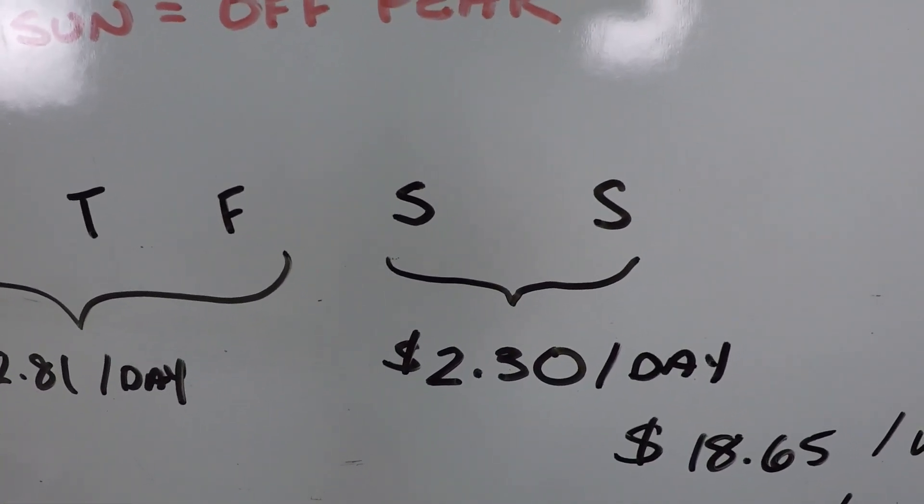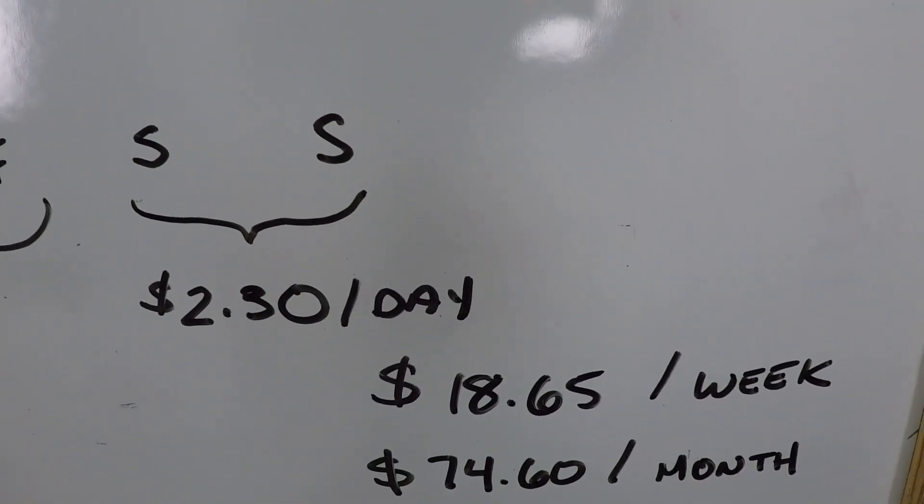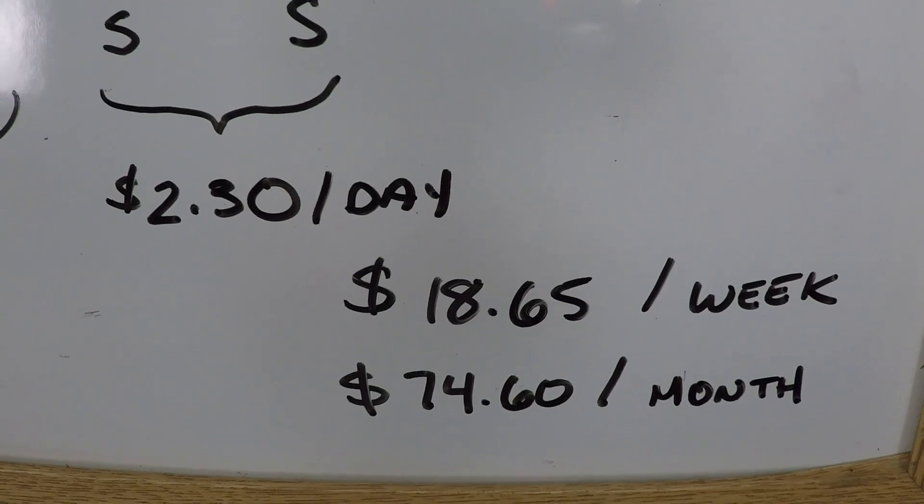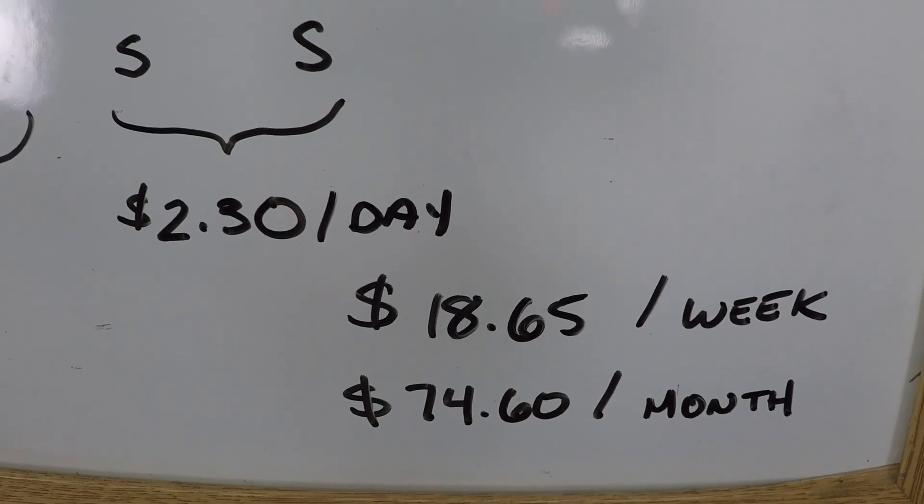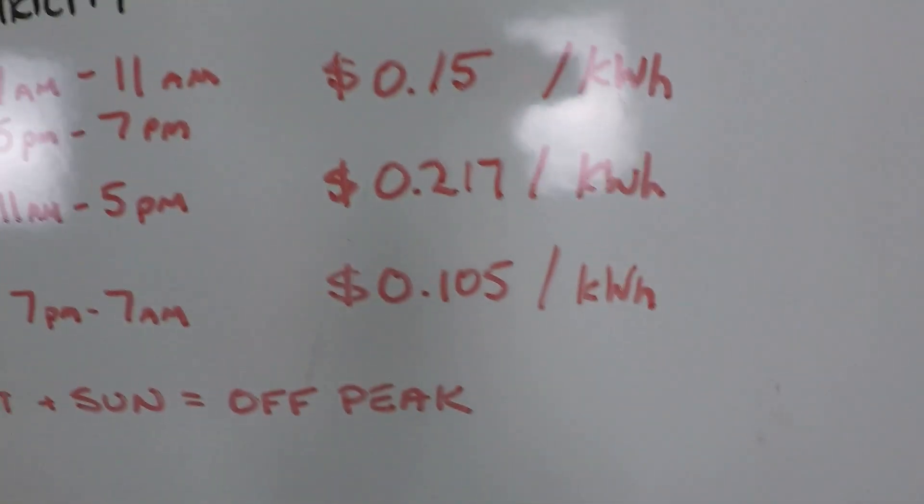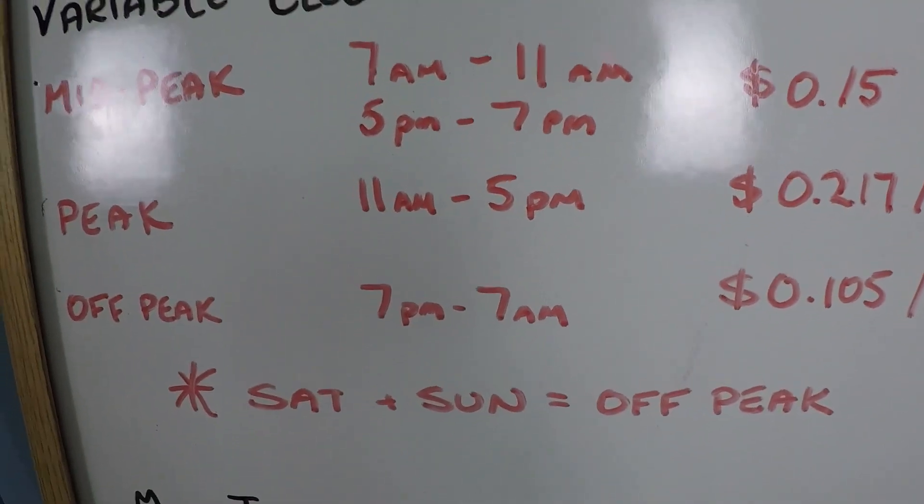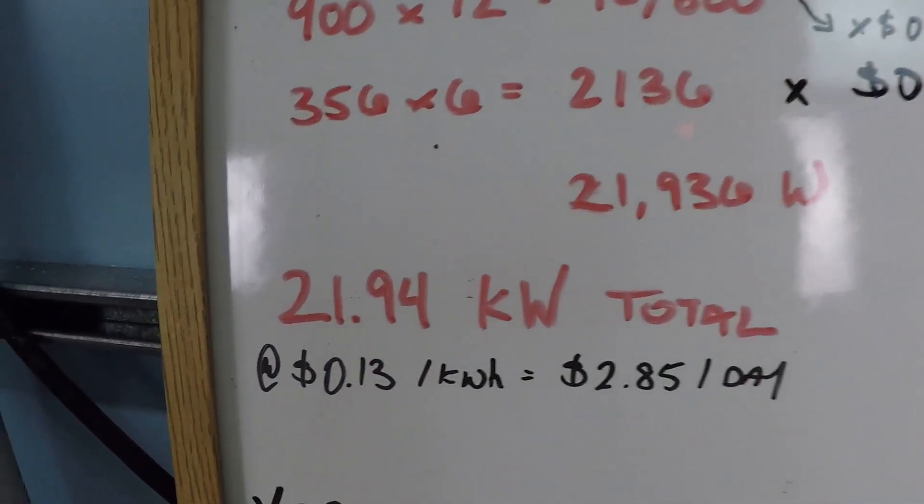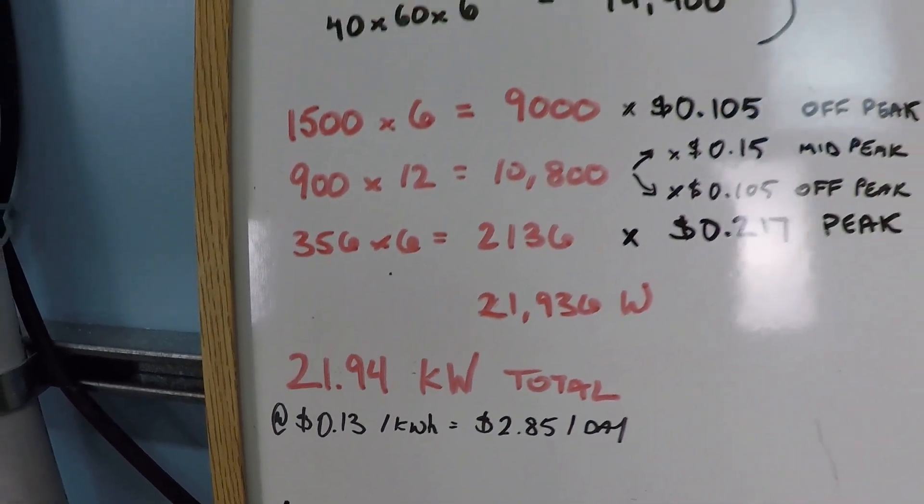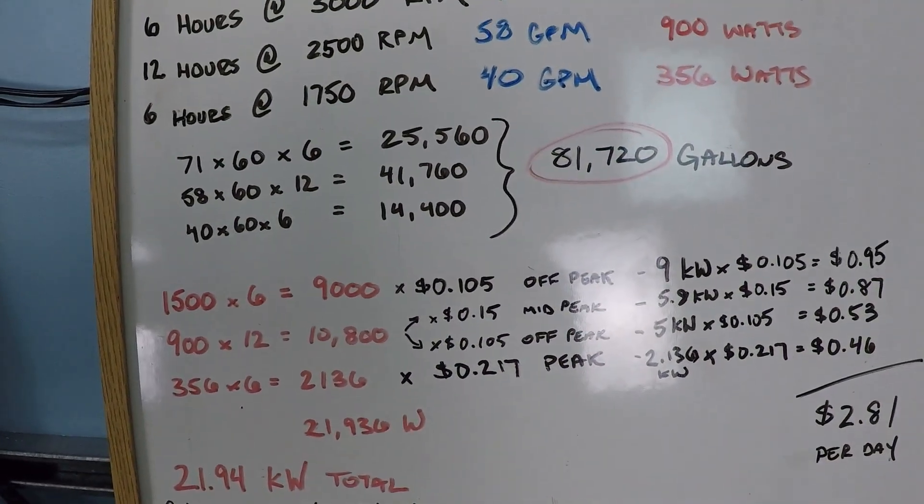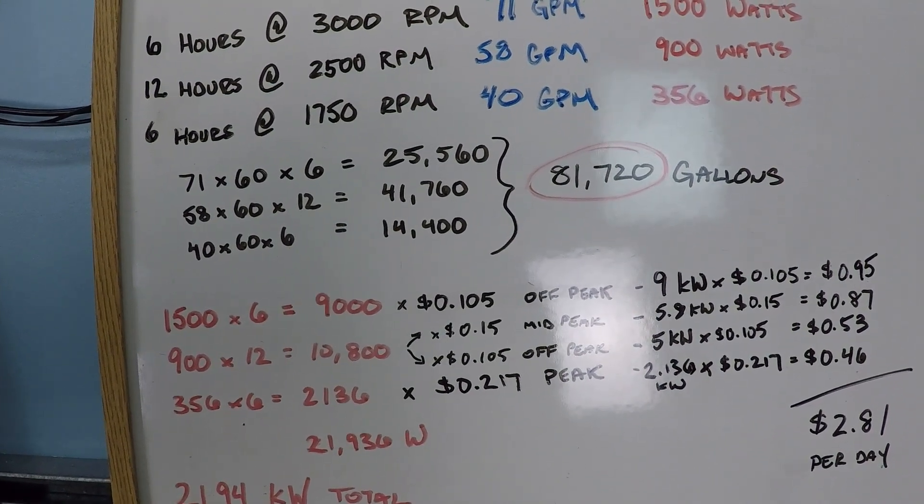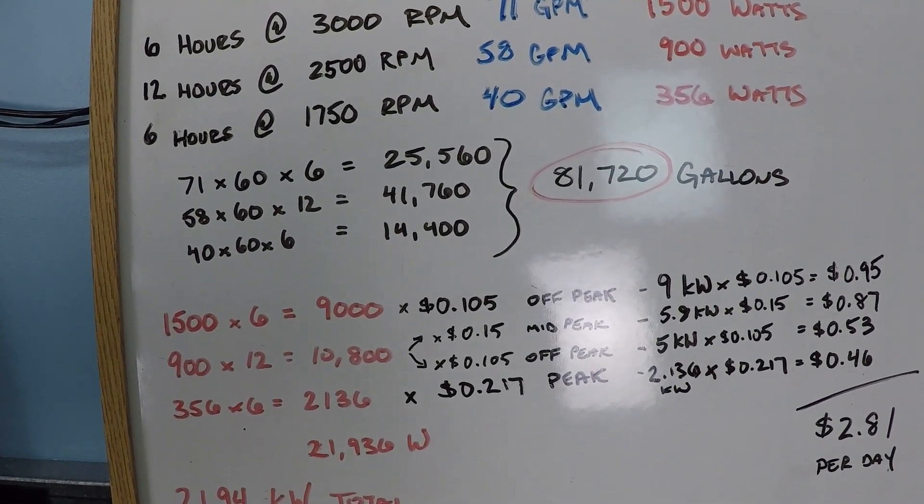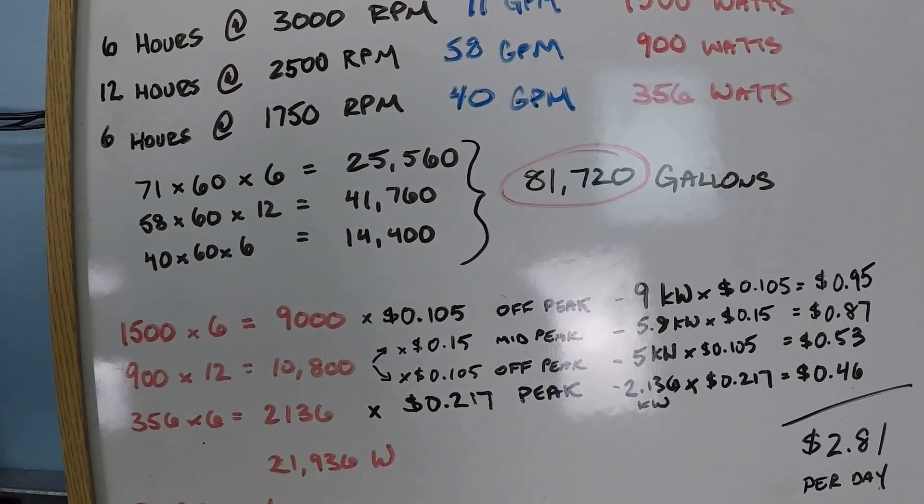Saturdays and Sundays $2.30 per day. That's $18.65 per week or $74.60 per month. And again that includes the variable rate calculations and the weekends being entirely off peak. It's very similar, next time I'll probably just use the multiplier because it keeps the math a little bit simpler for people to understand. But if you found this information helpful please be sure to like this video and subscribe to my YouTube channel and you can check out my website swimmingpoolsteve.com.